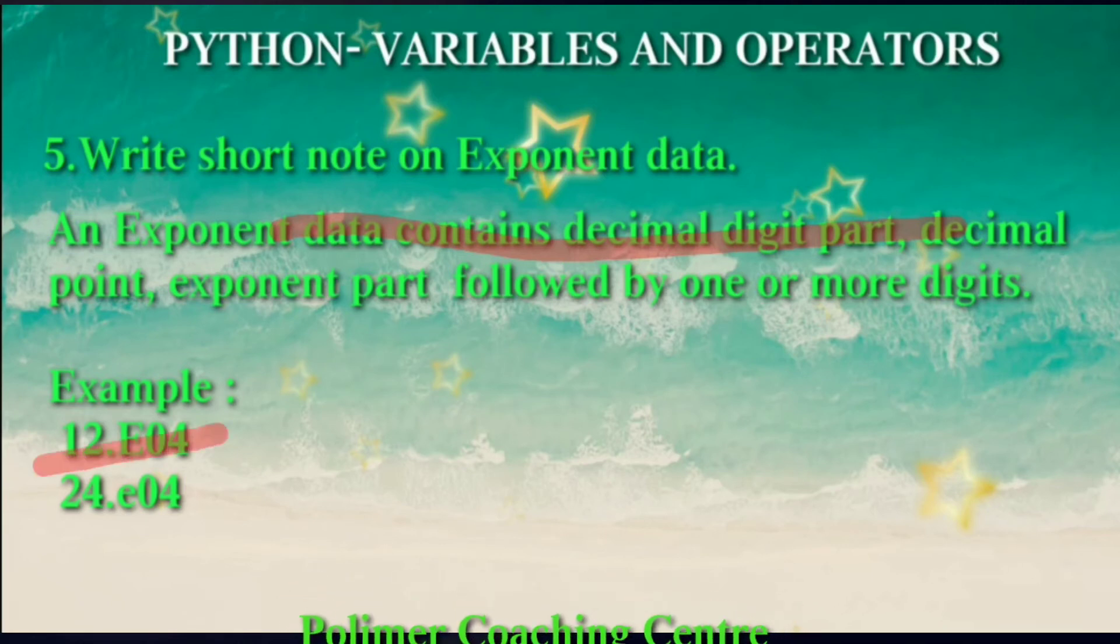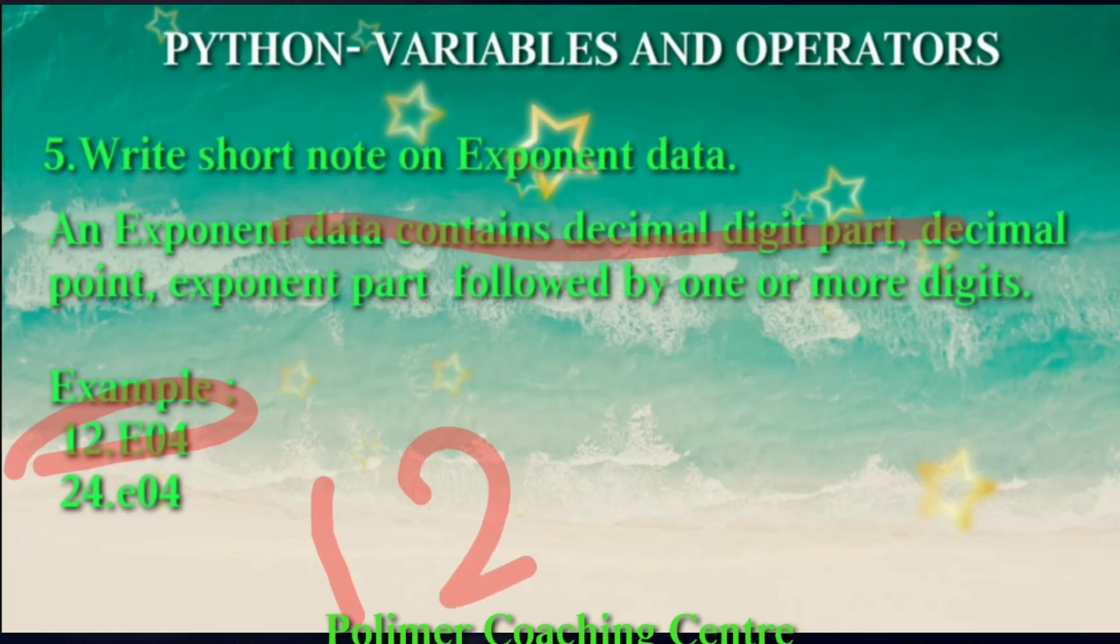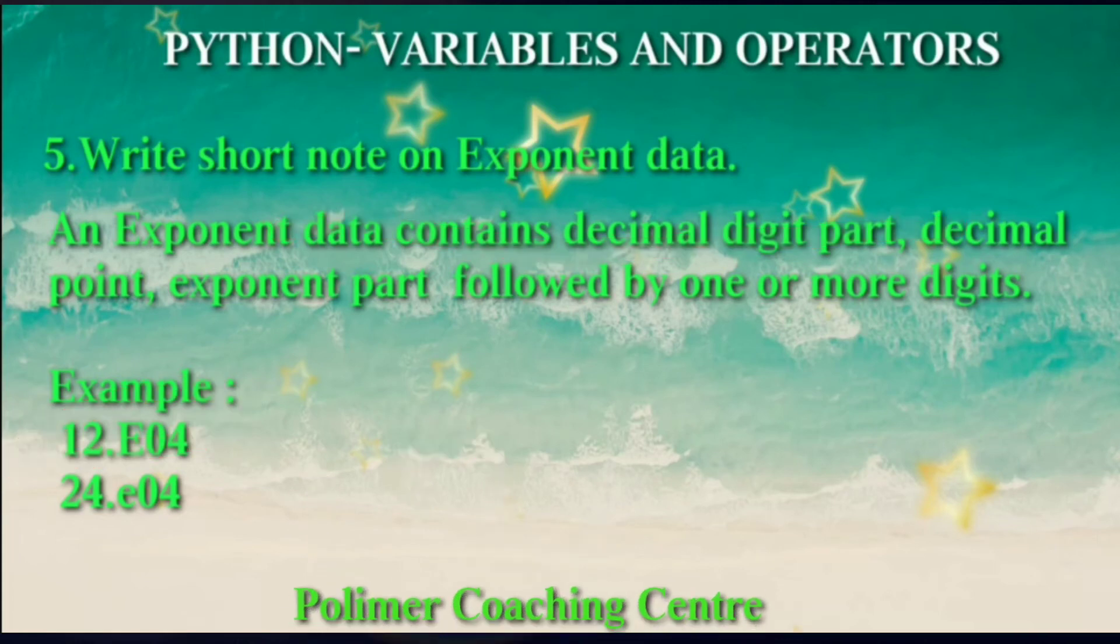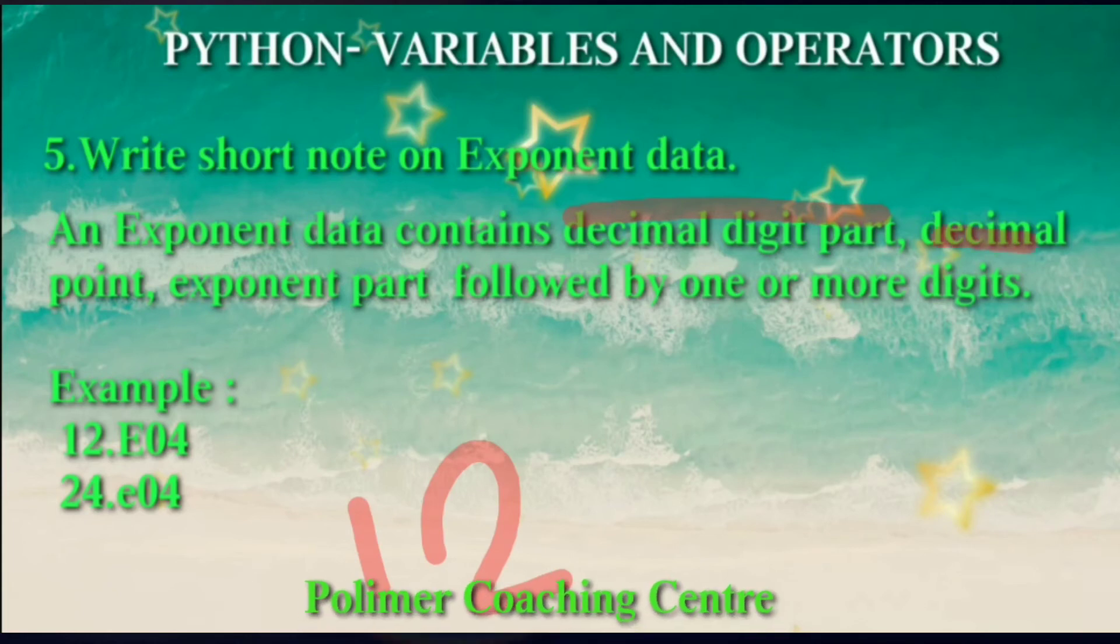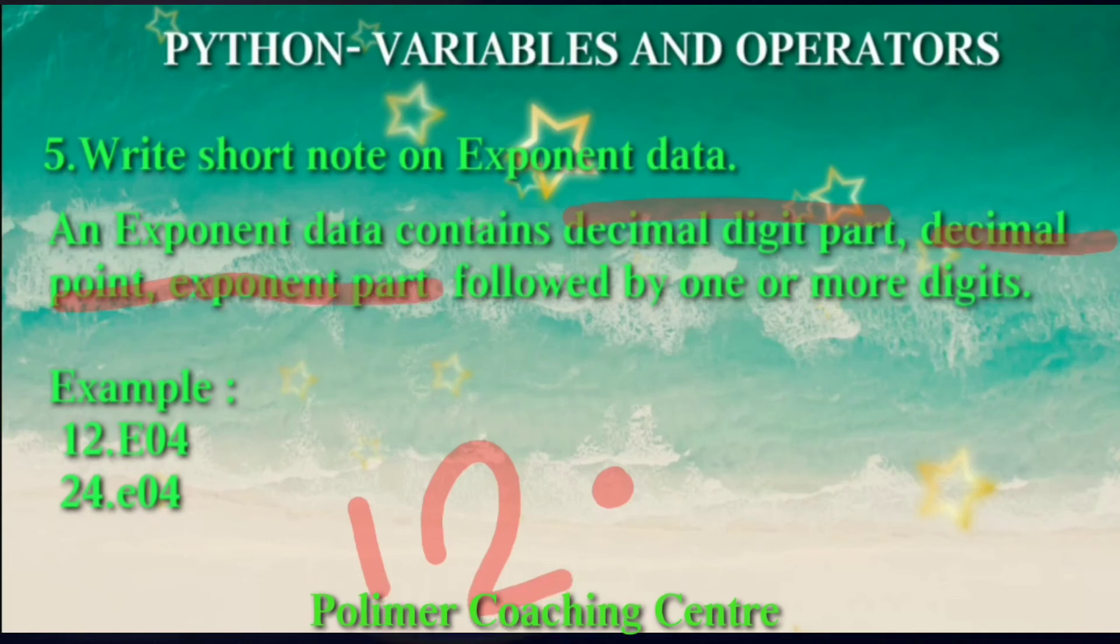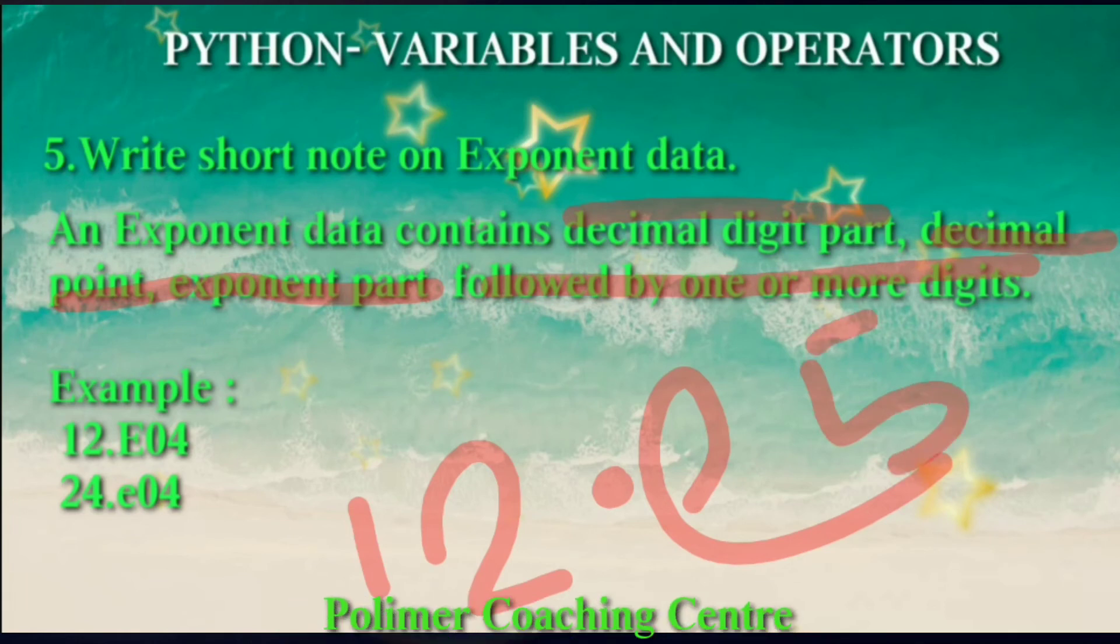Let's take this example: 12.E04. This is what we can tell you. Decimal digit part is 12, then decimal point, then exponent part - the small e or capital E. Then, followed by one or more digits, so 04. This is the number.